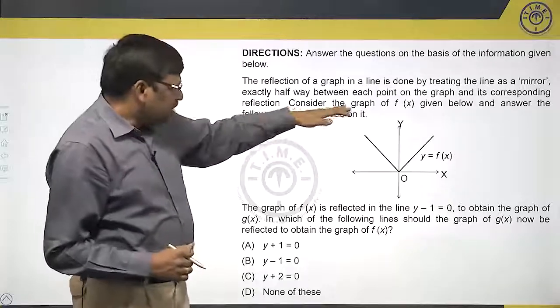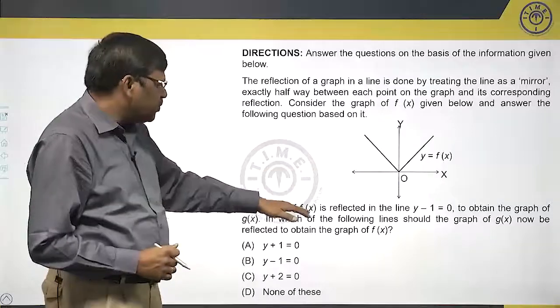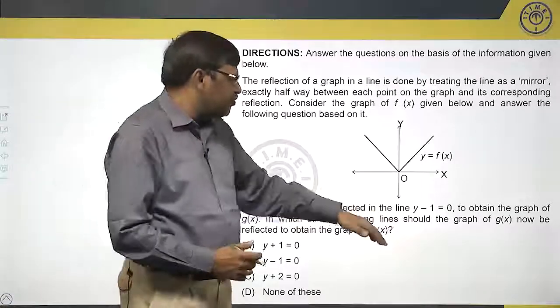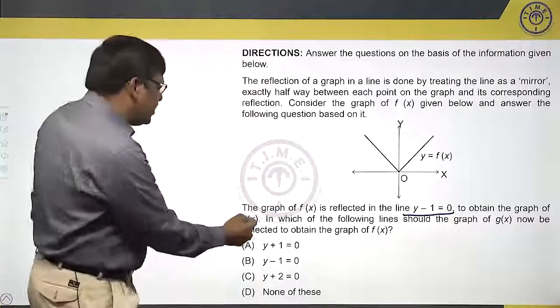Now consider the graph of f(x) given below and answer the question. What it says: the graph of f(x) is reflected in the line y minus 1 equals 0, and what we obtained is g(x).